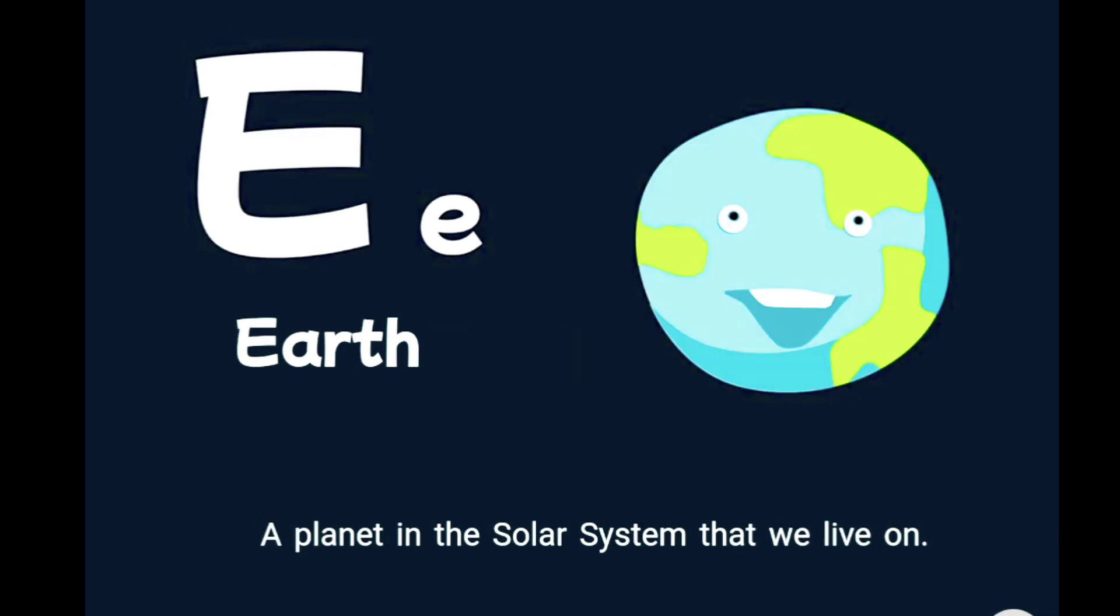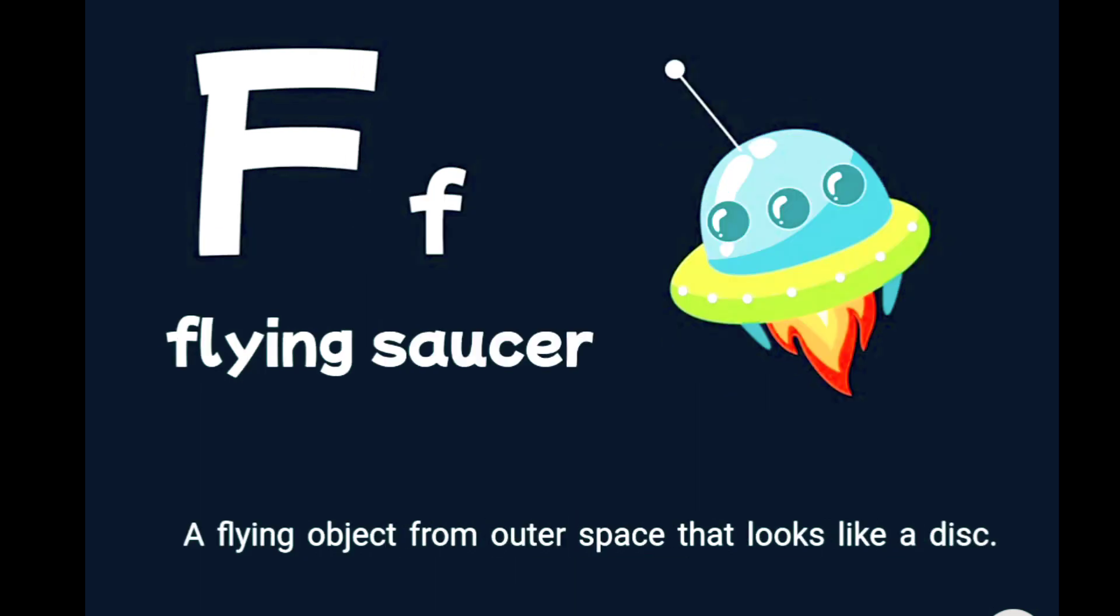E is for earth, a planet in the solar system that we live on. F is for flying saucer, a flying object from outer space that looks like a disk.